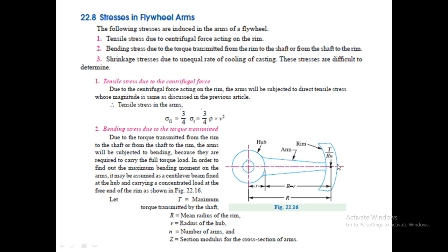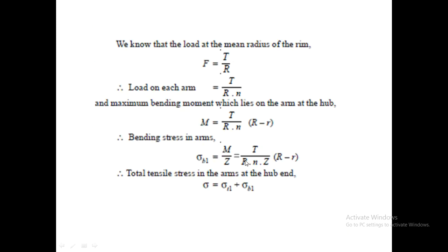Now that we have designed the rim, let us move on to designing the arms. There are three stresses acting on the arms: tensile stress due to centrifugal force on the rim, bending stress due to the torque transmitted from the rim to the shaft and hub, and shrinkage stress. Since shrinkage stress is difficult to determine, we will calculate only the tensile and bending stresses. The tensile stress is three-quarters of σ_t, already calculated.